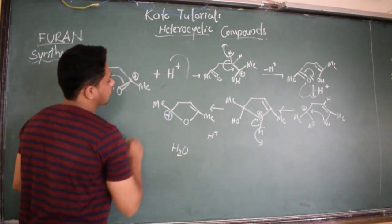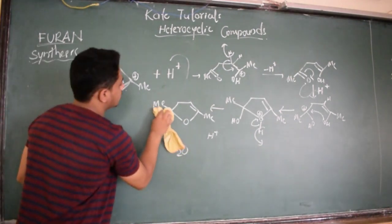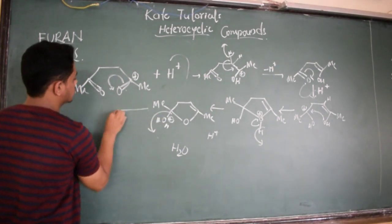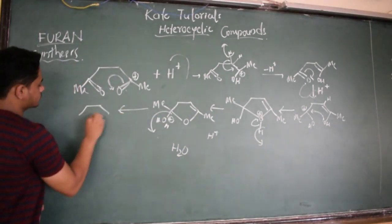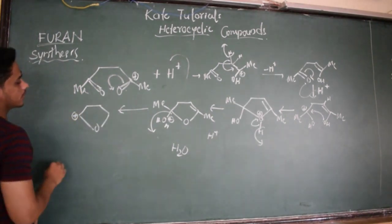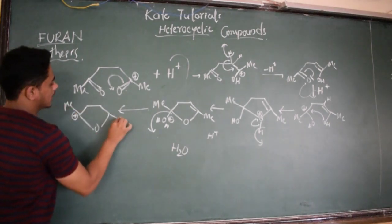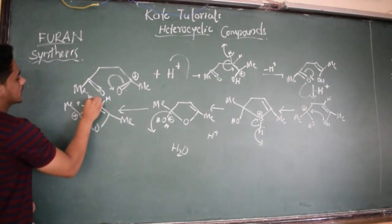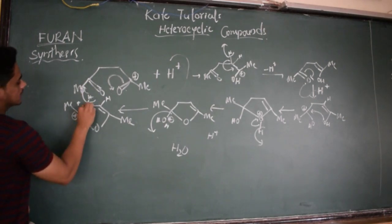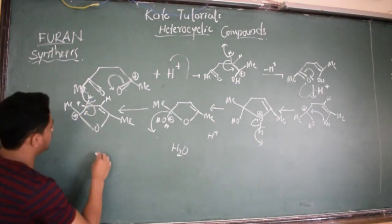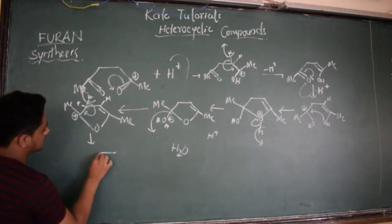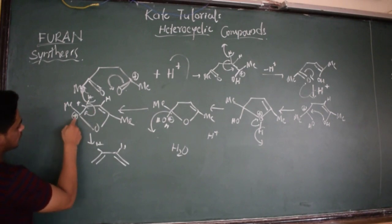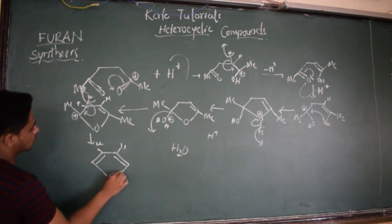After losing H2O, we get a positive charge on carbon. Here we have H, H on carbon, and oxygen has left as H2O. The carbon with a positive charge has a methyl group here. One hydrogen leaves — the electron shifts — and we get a double bond. Only one hydrogen remains and the ring becomes aromatic.